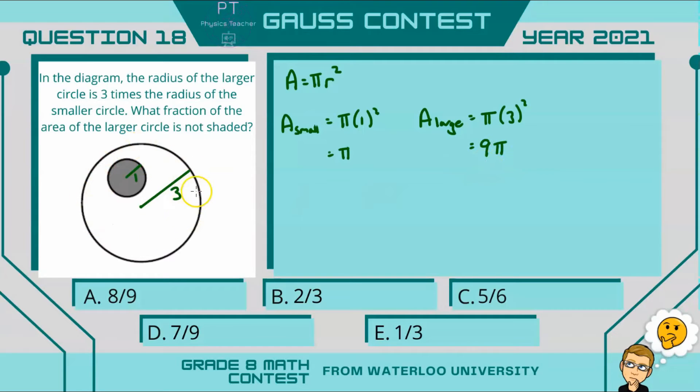So the unshaded area would be the area of the large circle, 9 pi, minus that of the small circle pi, which is 8 pi.